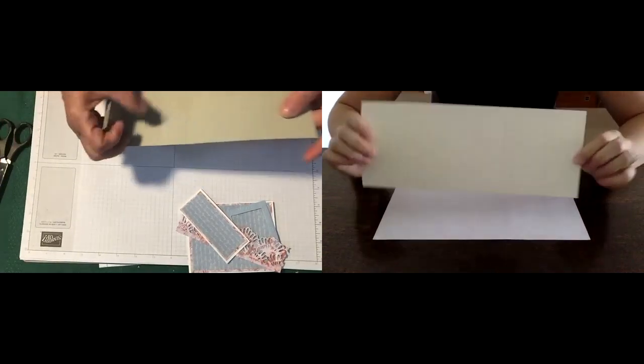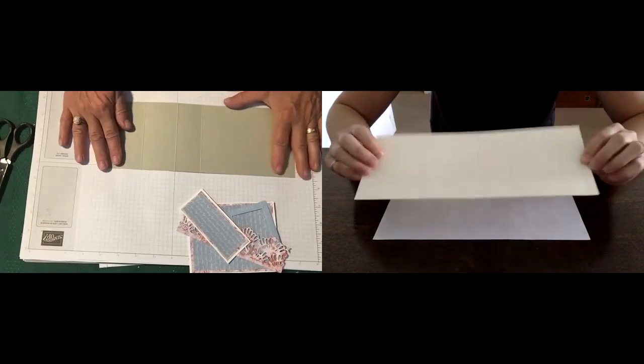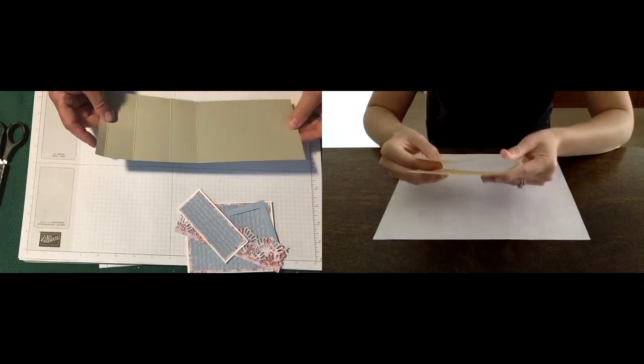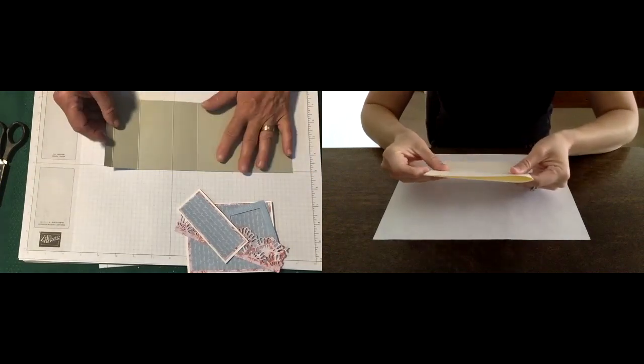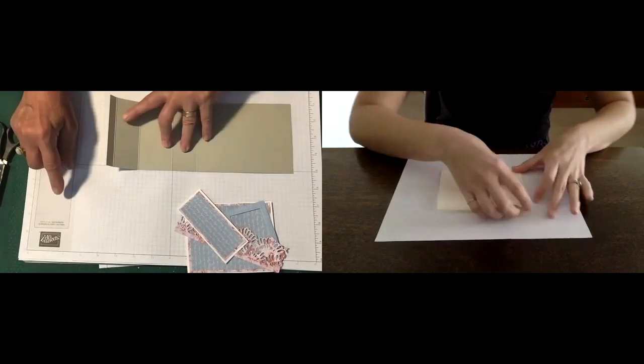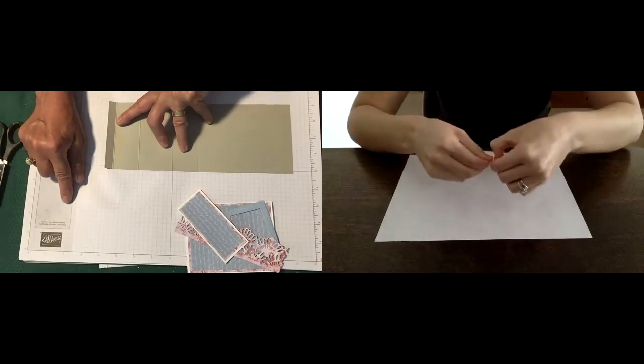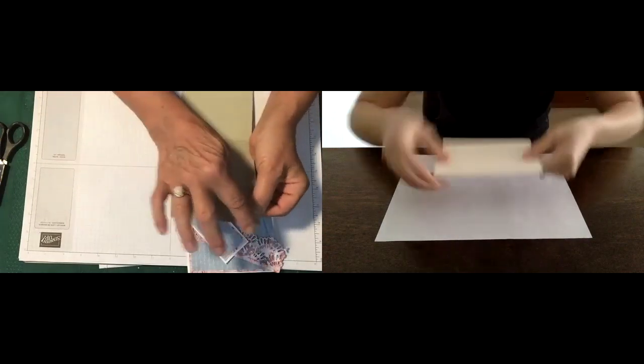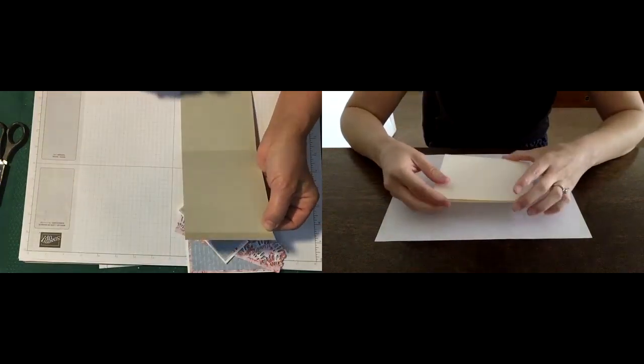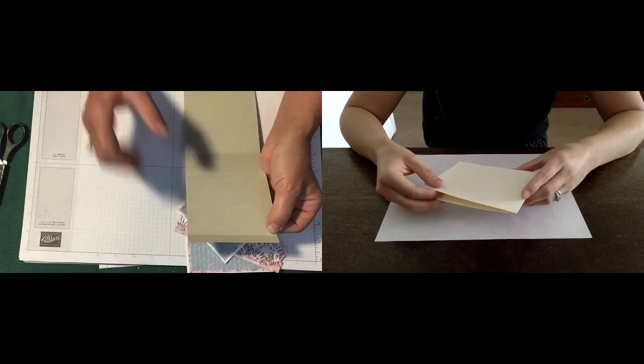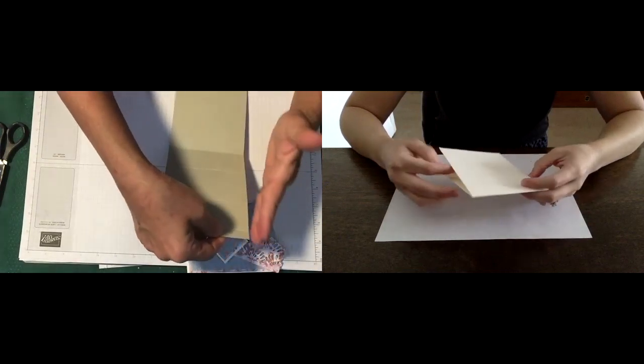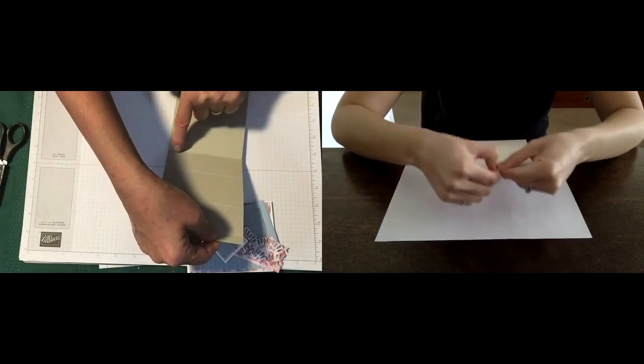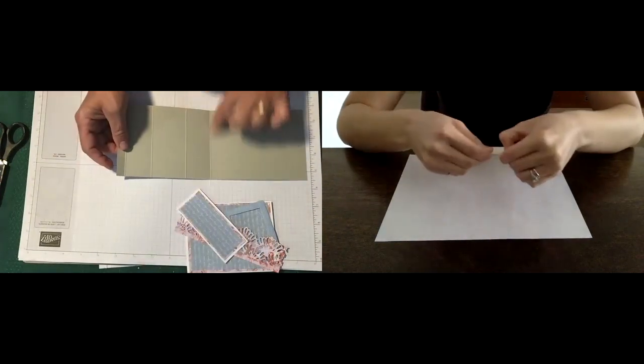So we've gone ahead and scored this. Renee, do you want to remind us what the dimensions are on that? Yes. So you are going to take your sheet of paper, and mine is going to be Sahara Sand, and you are going to cut the eight and a half side to four and a quarter. So it's going to be long. That's the opposite way of cutting. And then you will be left with the 11-inch side.